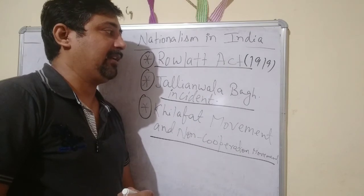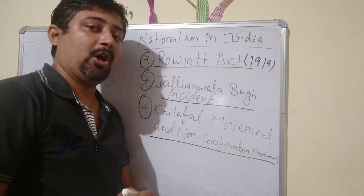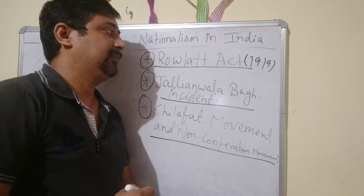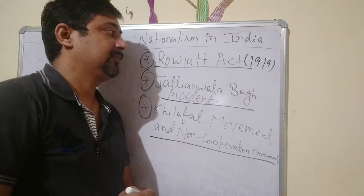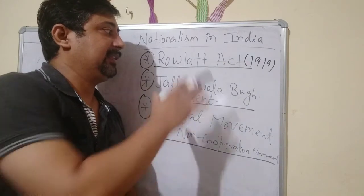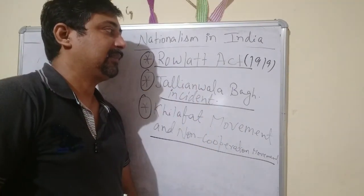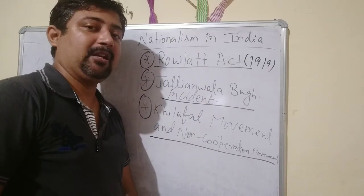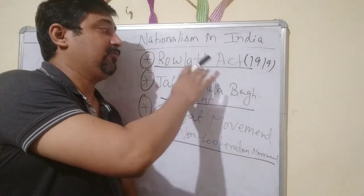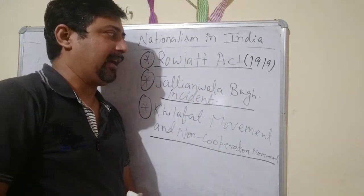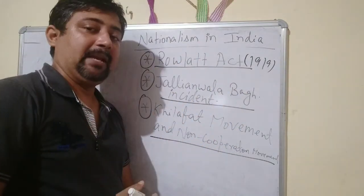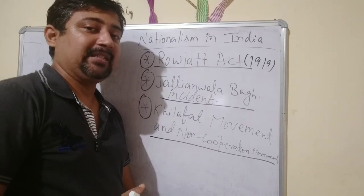On 6th April 1919, an All India Hartal — an All India strike — was observed and people boycotted the British. All over the country, there was anger against this Rowlatt Act, as people saw it as a direct attack on their fundamental and independence rights. Many leaders came forward to oppose this act.